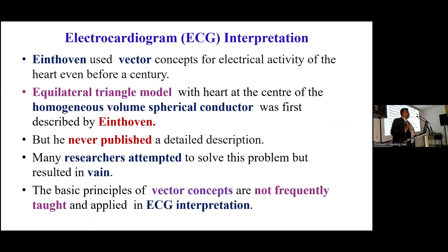Einthoven used vector concepts even before a century, but he never published a detailed description of the same. The equalized triangle model with the heart at the center of the homogeneous volume spherical conductor was initially proposed by Einthoven, but he never published a complete detailed description. Basic principles of vector concepts are not frequently taught and applied in ECG interpretation.